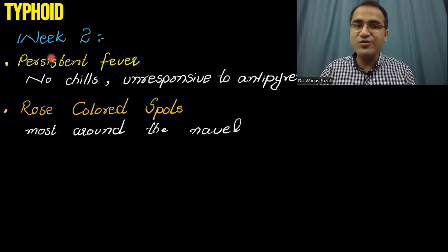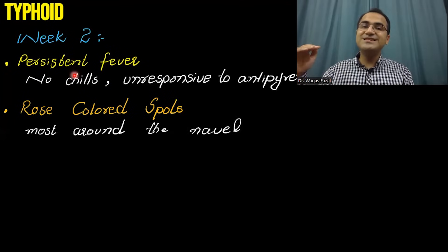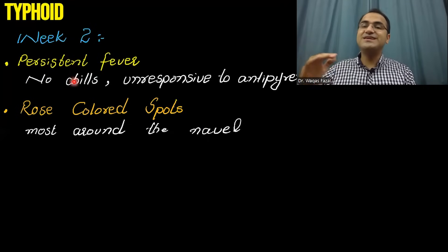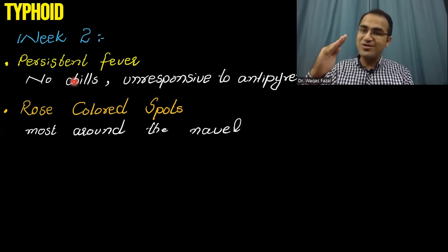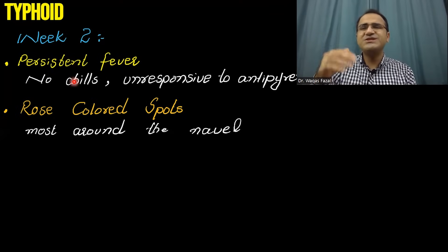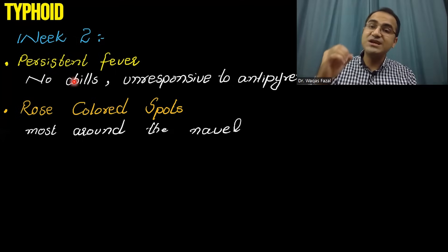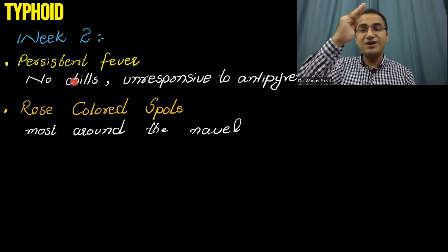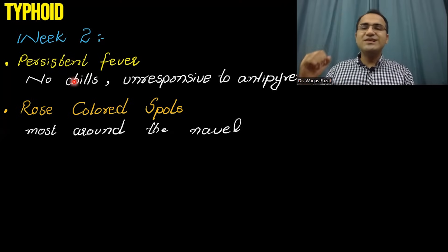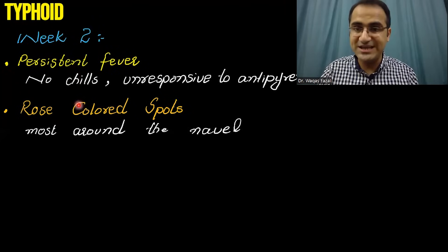In the second week, the patient will be having persistent fever. Remember that there is a step-ladder fashion of fever — the temperature gradually rises throughout the day, and in the morning there is usually a plateau where there is no rise and the patient feels better. The next day it again rises throughout the day till evening. That stepwise increase of temperature is called a step-ladder pattern.